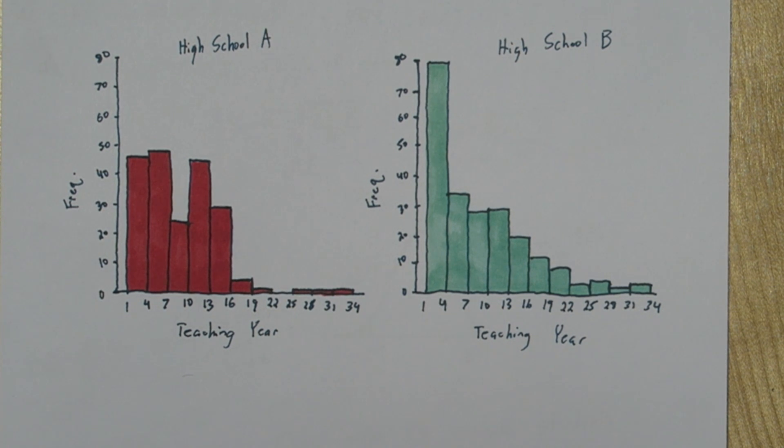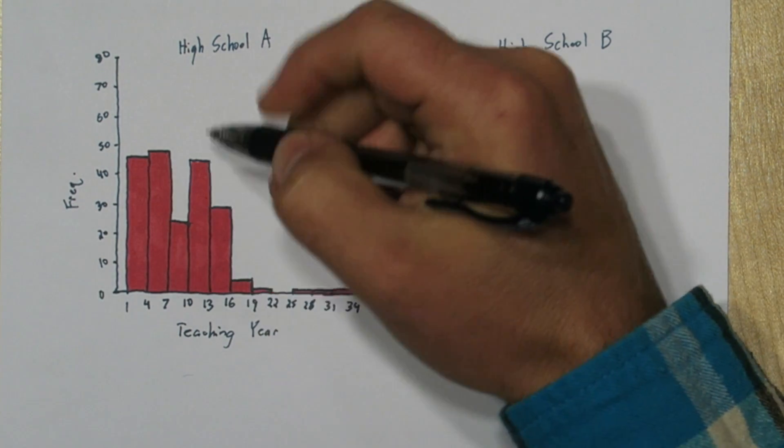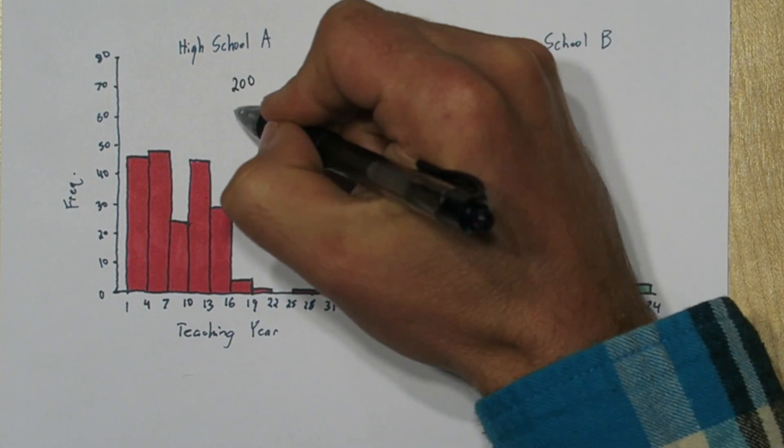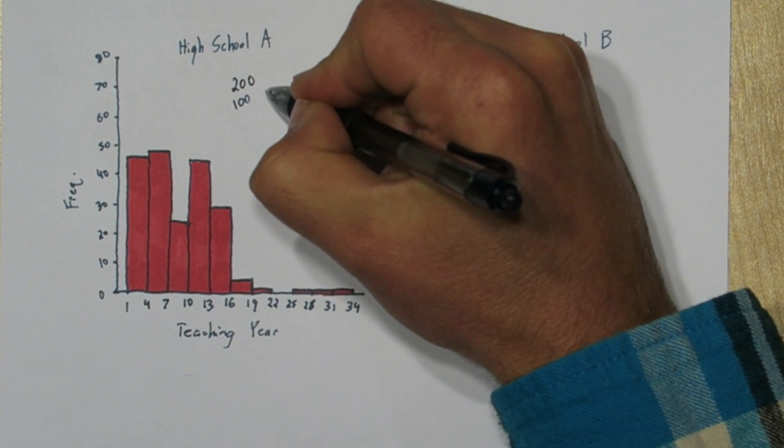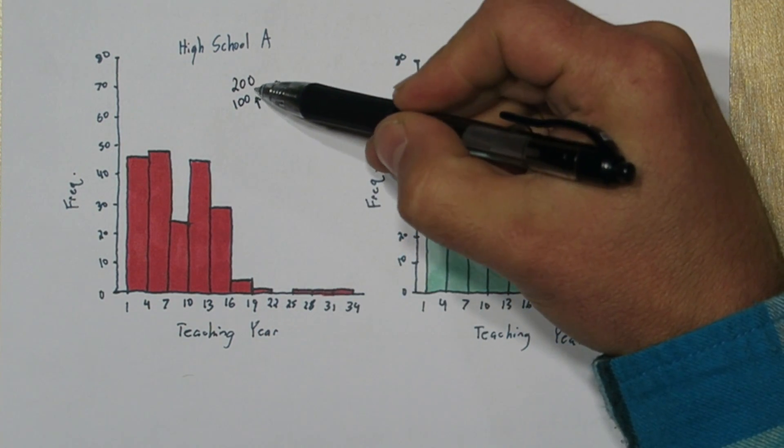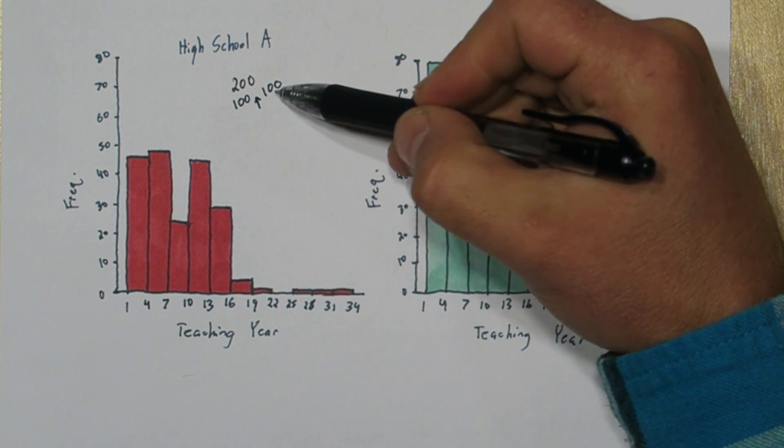For question 5, part A, we need to remember the median is the middle value. So if the total frequency of high school A is 200, you can picture the first 100 values and then the second 100 values. The median is going to be the average between the 100th and 101st value.